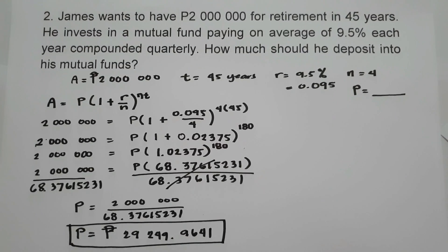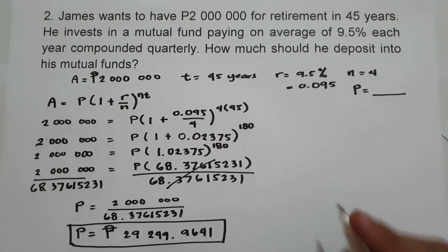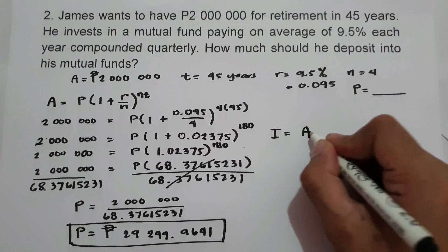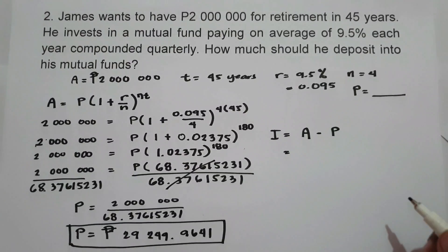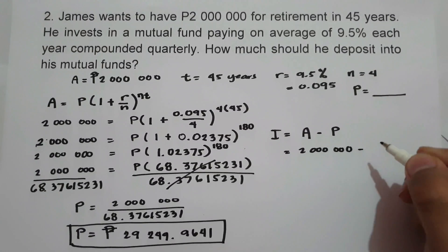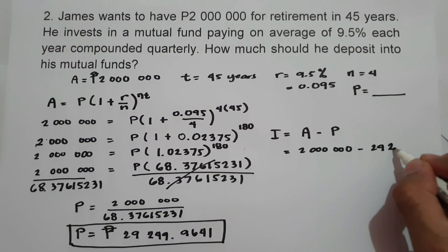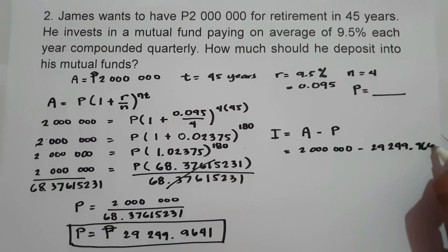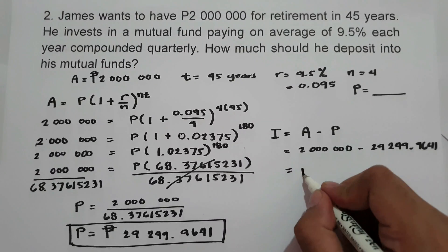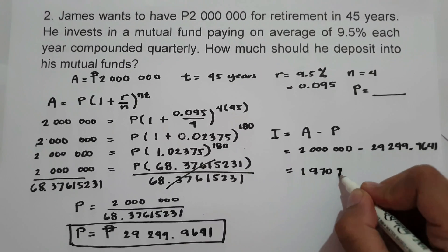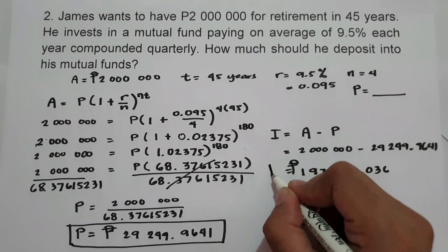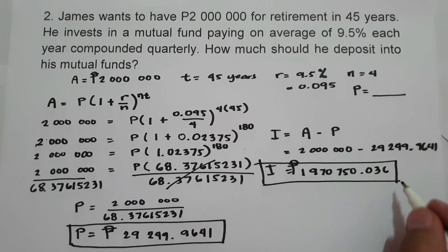Now let us find the interest after 45 years. Interest equals future value minus the principal. That is 2,000,000 minus 29,249.9641, which gives us 1,970,750.036 pesos. This will be the interest after 45 years.